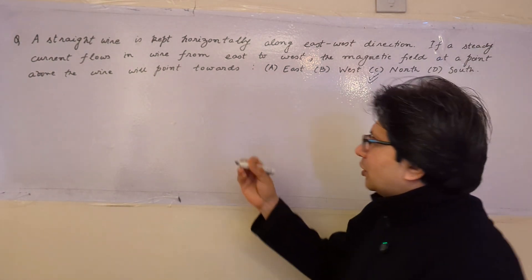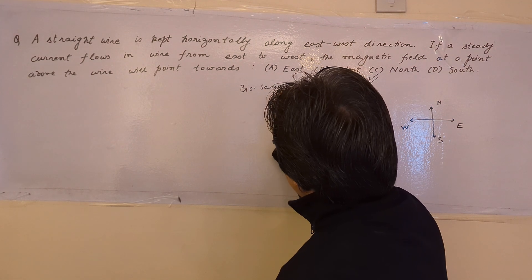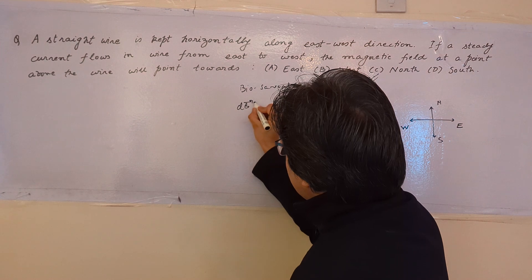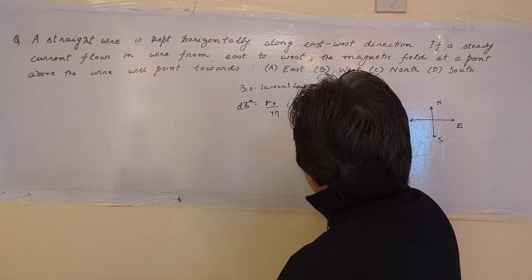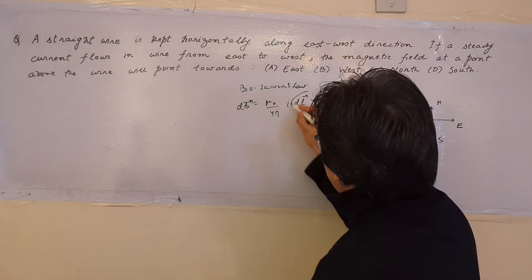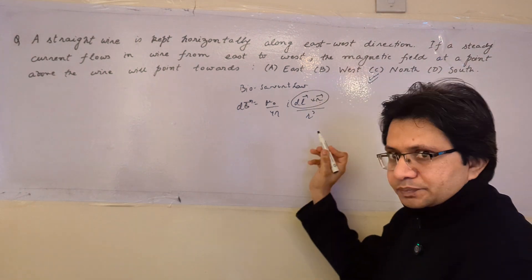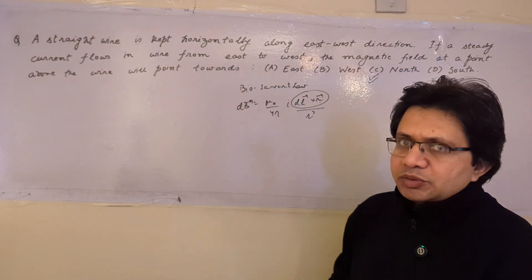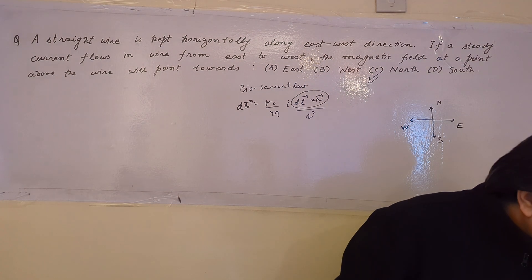The second method uses the Biot-Savart law. We know that dB equals μ₀ upon 4π times i dl cross r upon r cube. The main focus here is the direction of the magnetic field, which is given by the cross product of dl and r. Here, dl is the direction of the current in the wire, which is along the east-to-west direction.